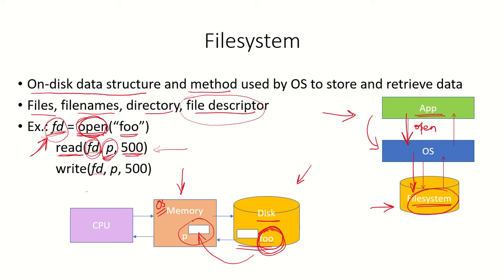Similarly, we can use this file descriptor to write to the file. We write using the file descriptor, from the buffer pointed to by p, and the size of the data we want to write — here specified as 500.